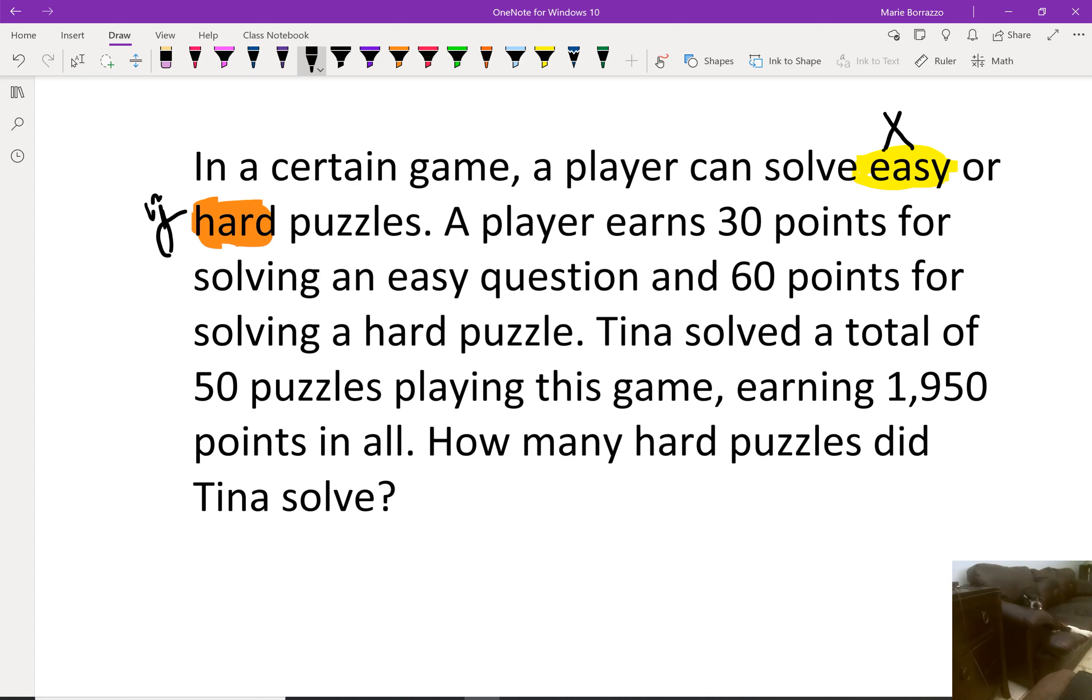In addition, they tell me that a player earns 30 points for solving easy and 60 points for hard puzzles. So immediately that tells me their point system. Here's what I know so far: x is identified as easy, y identifies hard puzzles. I have 30 points for every x, so 30x, and I have 60 points for every y, therefore 60y.